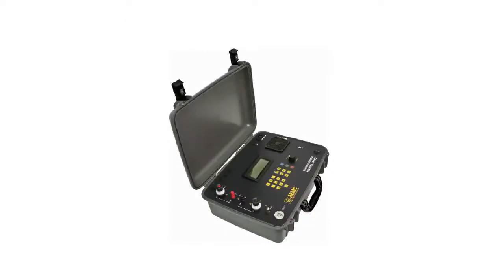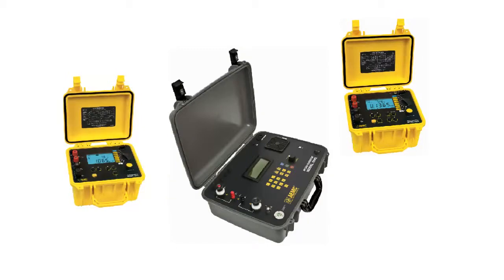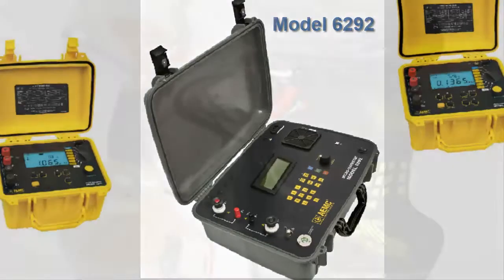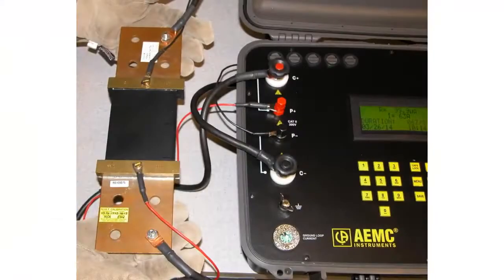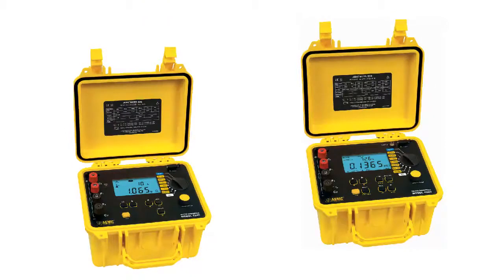AEMC Instruments offers a family of microohmmeters capable of performing four-wire measurements for load resistance and impedance. This includes the recently announced microohmmeter model 6292. In the example shown on the screen, the model 6292 is measuring the resistance of a test shunt. Other AEMC microohmmeter instruments that provide four-wire testing include the model 6250.